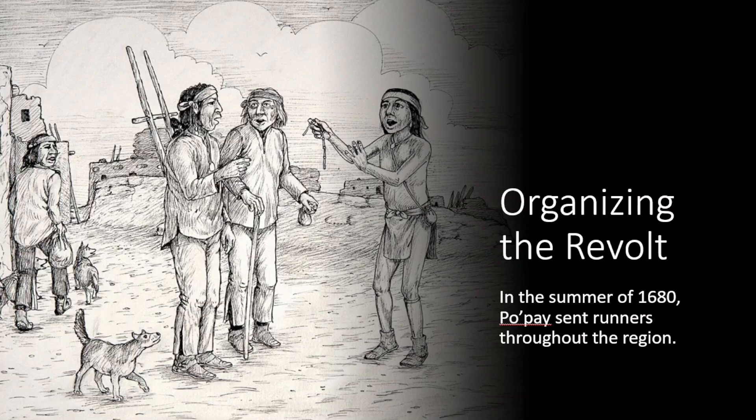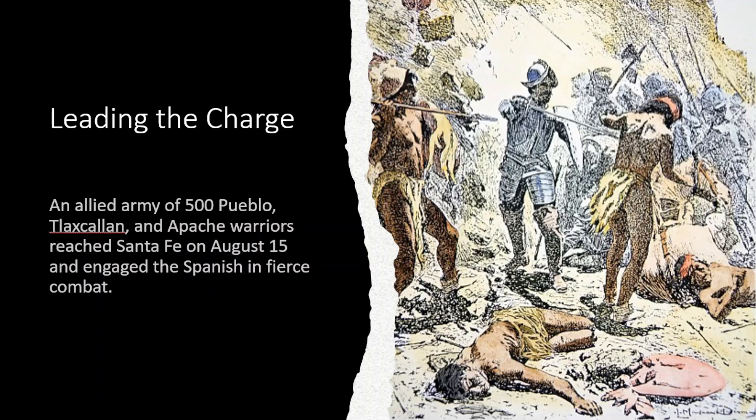Seeing the initial success of the rebellion, one pueblo after another — Taos, San Juan, Tesuque, Santa Clara, Picurís, Pecos, and many others — joined the fight for freedom. Those who had been on the fence about rebelling, once they saw the initial successful revolts and battles, decided to join in as well.